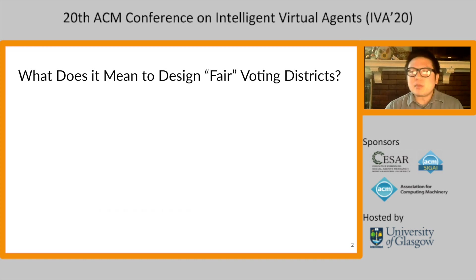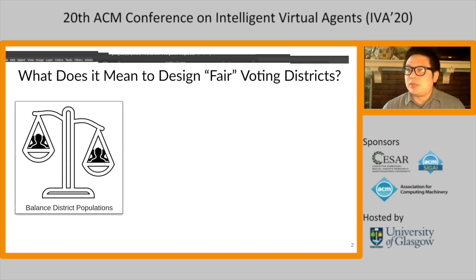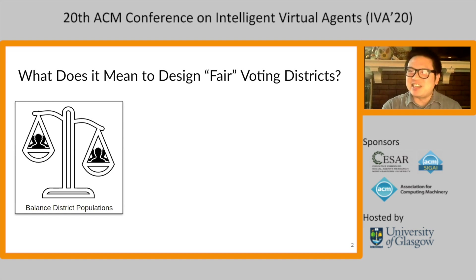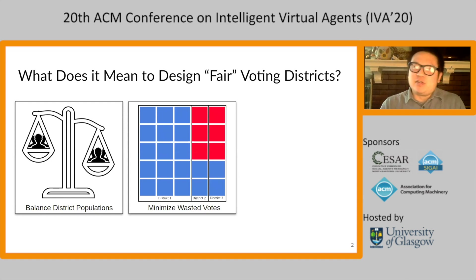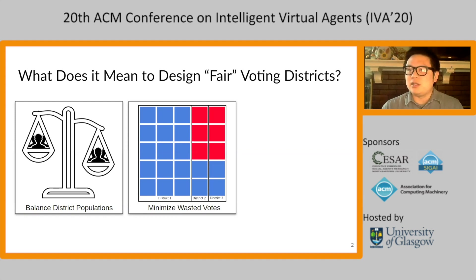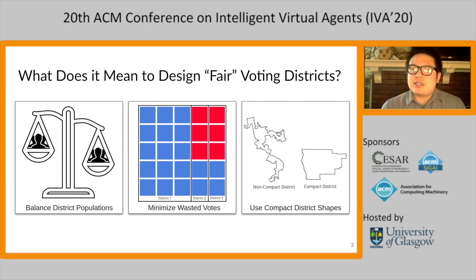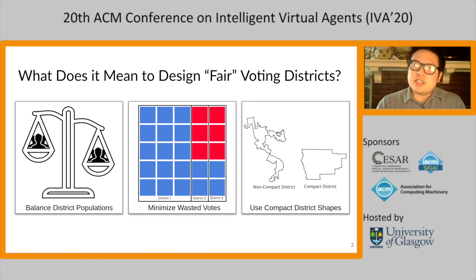For example, the districts we come up with should have balanced populations as much as possible. But this isn't sufficient for fairness. Politicians are experts at what's called packing or cracking districts — drawing them in such a way that puts all the opposition votes in one district or splits them up so they cannot win any district. So maybe we also want to think about voter efficiency, reducing wasted votes. And finally, we want to avoid designing districts with really complex shapes. These are only three of a litany of district characteristics relevant to fairness, but even with just these three, designers may need to prioritize and make tough trade-off decisions.